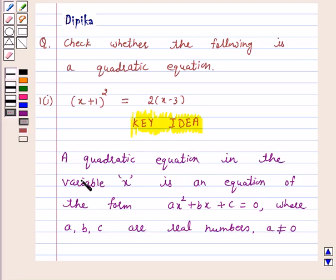We know that a quadratic equation in the variable x is an equation of the form ax square plus bx plus c equals 0, where a, b, c are real numbers and a is not equal to 0. This is the key idea behind this question.